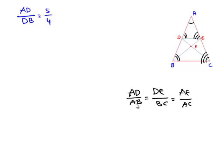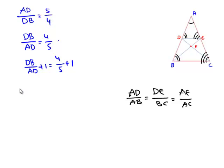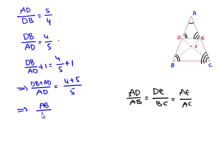To get AB in the denominator, we interchange, because the sum of AD and DB equals AB. Interchanging gives DB to AD equals 4 to 5. Adding 1 to both sides: DB/AD + 1 = 4/5 + 1. On the left side, with LCM AD, the numerator becomes DB plus AD, which equals AB. On the right side, LCM is 5 and numerator is 4 plus 5 equals 9. So AB/AD = 9/5.